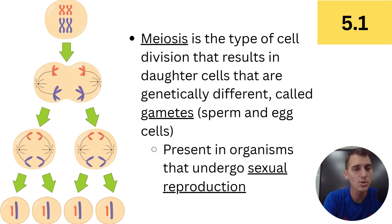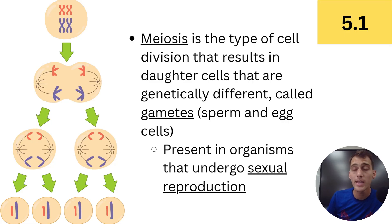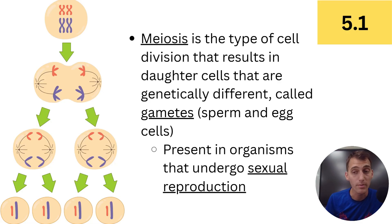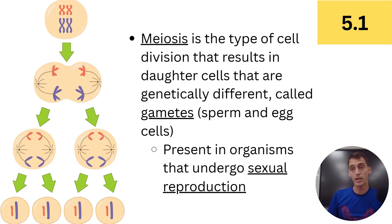Why are we producing cells that are genetically different? This isn't about growth, tissue repair, or that kind of stuff anymore — this is about passing genes down to the next generation. The important thing is that cells produced by meiosis are genetically different from each other; they contain different combinations of genes. Those cells become gametes — sperm and egg cells — which are used for sexual reproduction. A sperm and an egg combine to form a zygote, which becomes a new offspring.